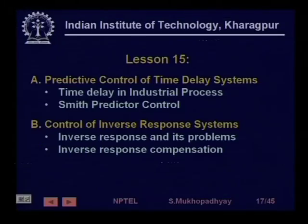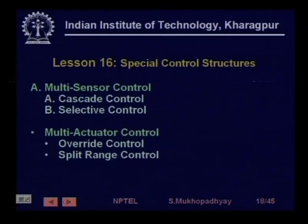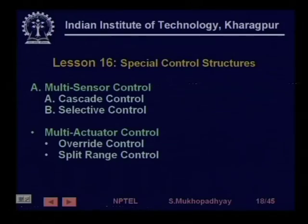We looked at these two particular kinds of processes — time delay systems and inverse response processes — and introduced some particular control structures used for controlling them. Then we looked at special control structures which use multiple sensors or multiple actuation points. In particular, we first looked at cascade control and explained how it can give much improved performance compared to non-cascade control if some intermediate variables can be measured.